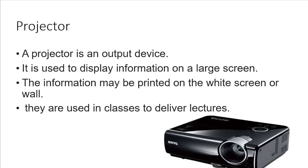Next is projector. A projector is an output device also called an optical device. The word optical relates to light, so we use light waves to get the output. The output is in the form of an image projected on a big screen, which is why it is called a projector. Projector is used to display information on a large screen — the information may be projected on a white screen or wall. They are used in colleges and universities for delivering lectures. A cable video graphic adapter (VGA) is used to connect a projector with a computer.